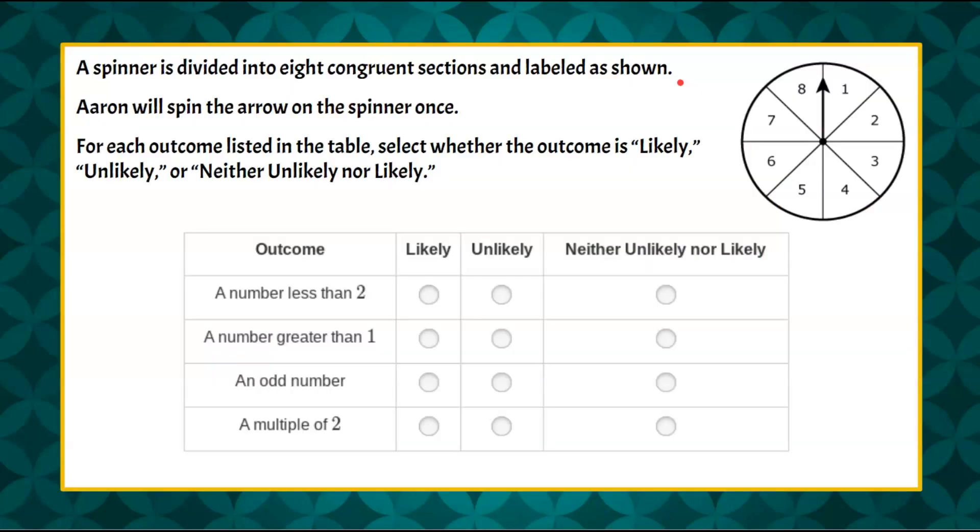Here is our question today. We have a spinner that is divided into eight congruent sections and labeled as shown right here to the right. Aaron will spin the arrow on the spinner once.